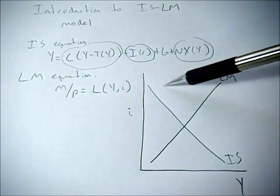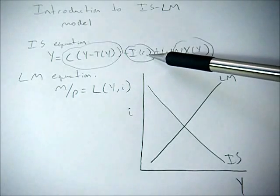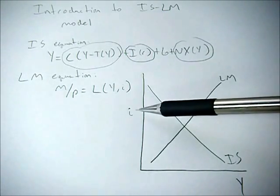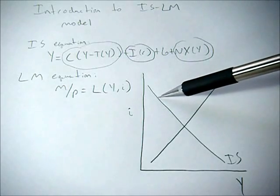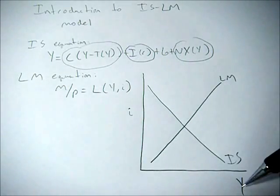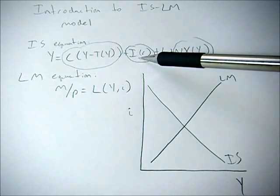Okay, the reason that the IS curve is downward sloping is because Y depends on the real interest rate, which is directly linked to the nominal interest rate. So as the nominal interest rate goes down, we see an increase in Y. And this is caused by that increase in investment spending.